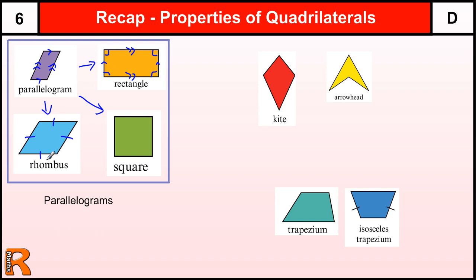These definitions for rectangles and rhombuses are interesting because they are both part of the definition of a square. A square is a parallelogram because opposite sides are parallel. It is also a rectangle because it has right-angle corners, and it is also a rhombus because it has equal sides. So a square is very special — it is a rectangle, a rhombus, a parallelogram, and a quadrilateral, but when all those properties are true we call it a square.